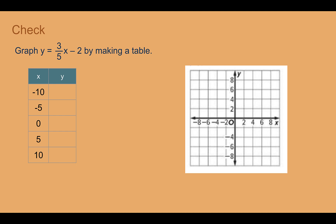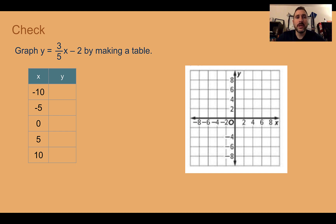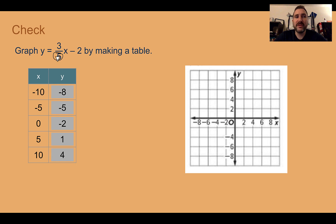Check your understanding: Graph y equals three-fifths x minus 2 by making a table. Pause the video now and complete the check. If you plug in the values given for x, you get those values for y. Notice they chose numbers easily divisible by 5 — so take your x value, divide by 5, then multiply by 3. Graphing those points, the line would end up looking like this.